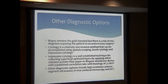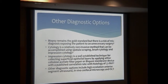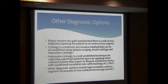So what are some other diagnostic options besides biopsy? Biopsy is the gold standard, but it puts the patient at sometimes unnecessary risk if you're wrong. Cytology is a relatively non-invasive method described since the 1950s. Impression cytology can be useful using cellulose acetate filter paper or biopore membrane device, with a published correlation rate with histology of 77% to 80%. The Barrows method of impression cytology can have a sensitivity up to 95%. Other diagnostic options include high-resolution anterior segment ultrasound, microscopy, and OCT.